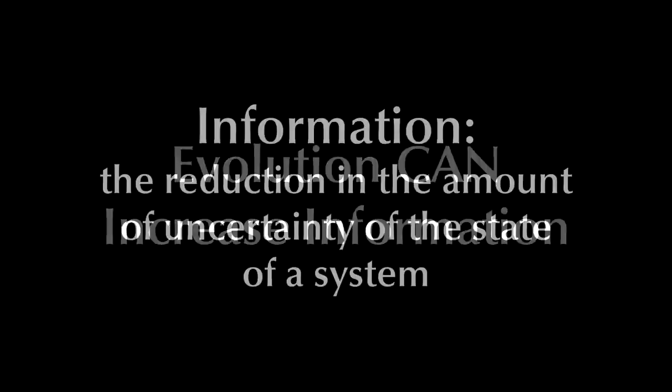For that matter, what actually is information? The scientific definition of information is the reduction in the amount of uncertainty of the state of a system. In other words, to know more about a system — to have less uncertainty about it — you need to obtain information. This is quantifiable. If the amount of uncertainty has been cut in half, then one bit of information has been obtained.